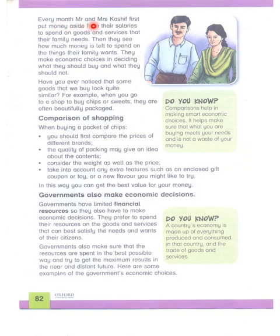Every month, Mr. and Mrs. Kashi first put money aside from their salary to spend on goods and services that their family needs. Then they see how much money is left to spend on things their family wants. They make economic choices in deciding what they should buy and what they should not.